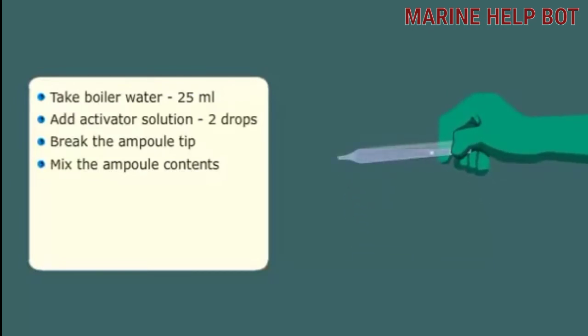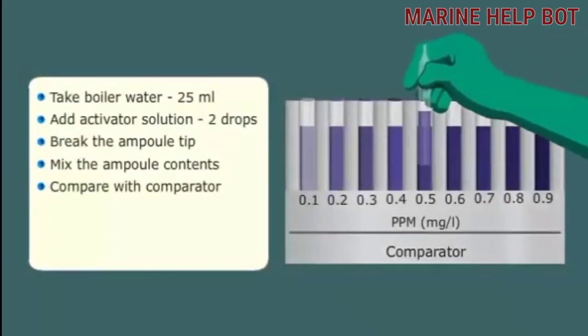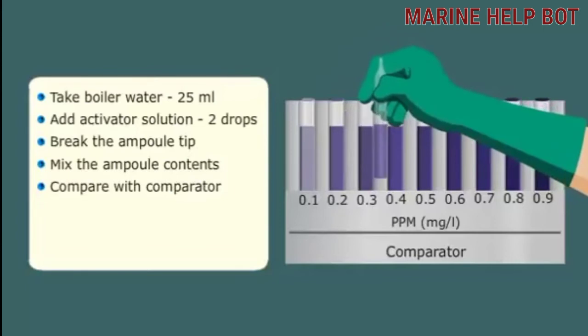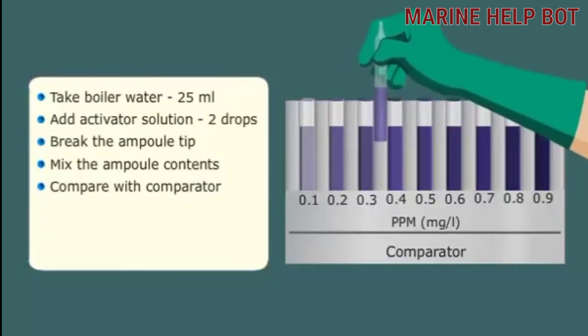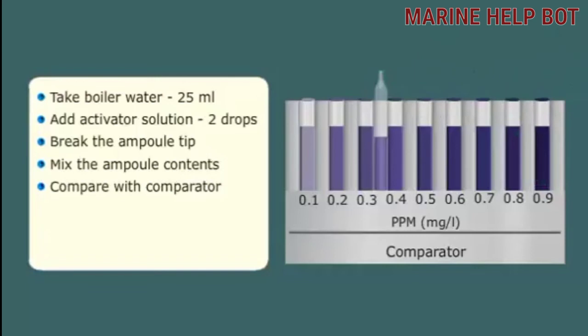Wait 10 minutes for full color development. Compare the color of the ampoule contents with the comparator's indicator color tubes. Place the filled ampoule inside the comparator. The dissolved oxygen content is given by the marking on the matching tube.